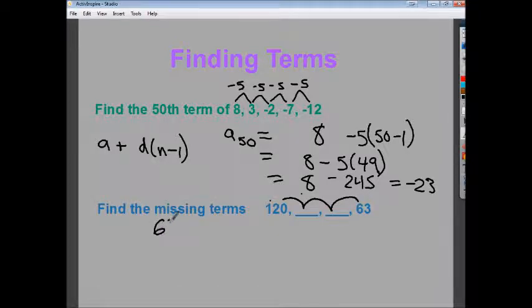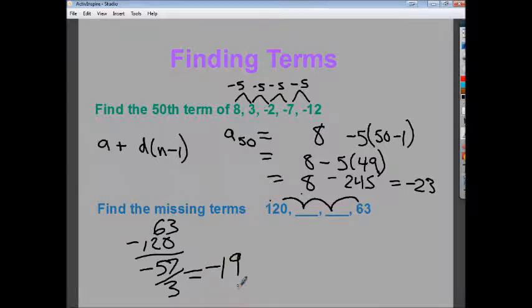So I'm going to do 63 minus 120. When I do 63 minus 120, I end up with negative 57. And I'm going to break that into three parts. So when I do that, I get negative 19. That's my common difference. To find my missing terms, I just take my initial term and add the common difference. So 120 plus negative 19, or minus 19. So this term would be 101. If I go down 19 again, I end up with 82. And if I go down 19 again, it should give me 63, and it does.